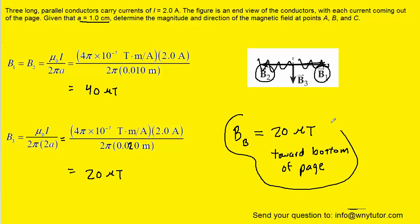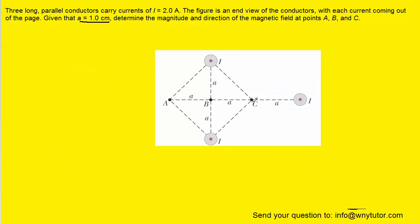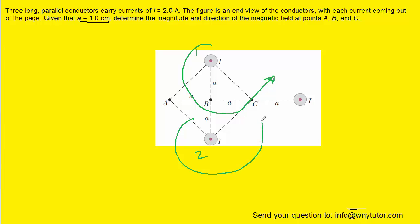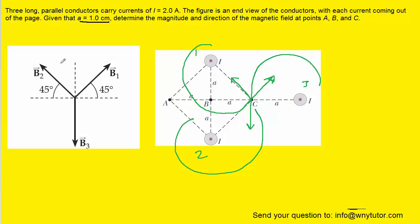Now we'll move on to point C. There's something unexpected here — the magnetic field at point C is actually going to be zero. Consider wire 1, whose counterclockwise magnetic field circles around and points in a certain direction at point C. Wire 2's counterclockwise field points in another direction at point C. Wire 3's counterclockwise field is pointing straight down at point C. In a cleaner diagram, these three magnetic field vectors point in those respective directions.